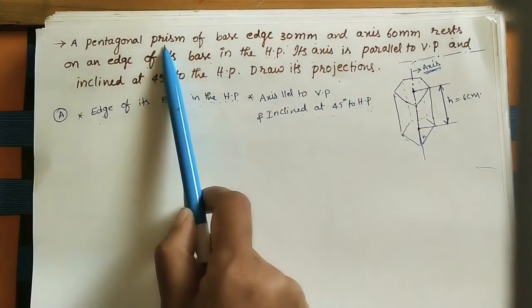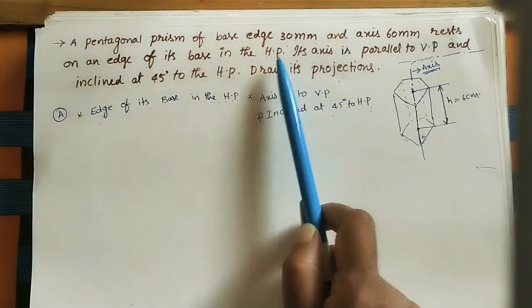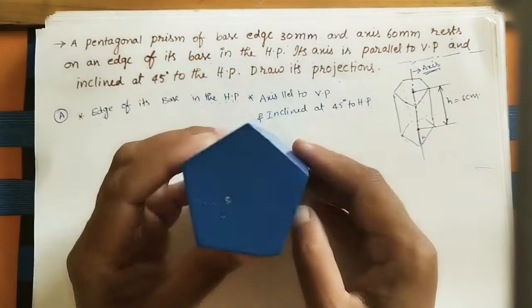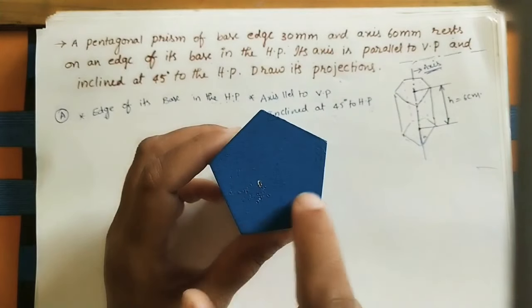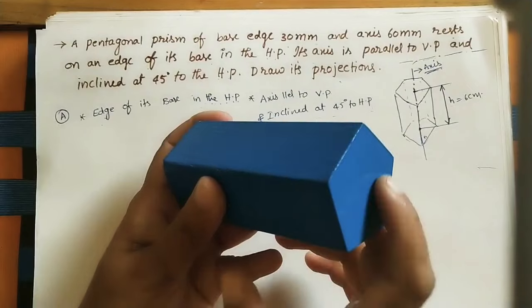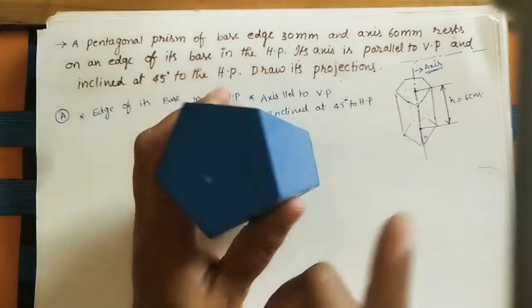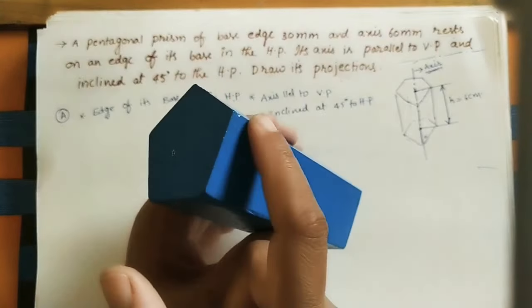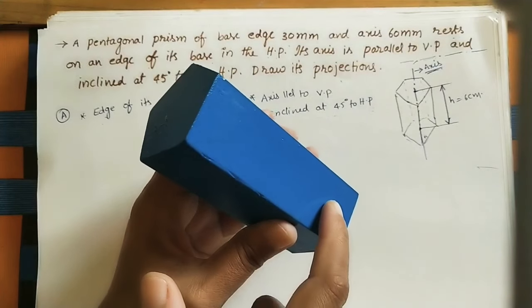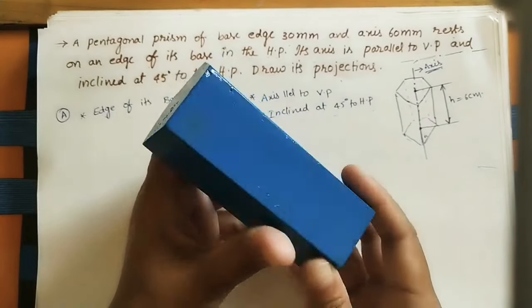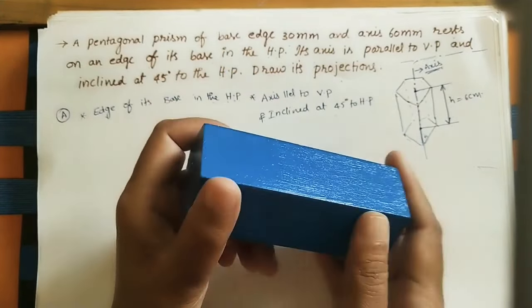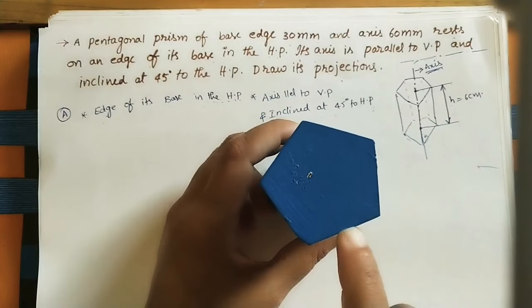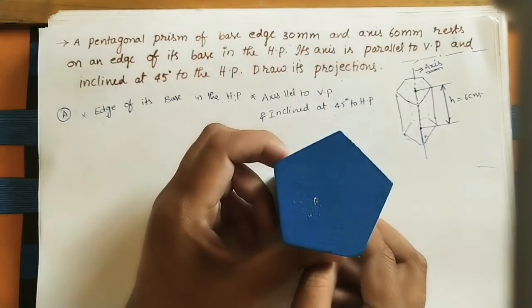HP means horizontal plane, VP means vertical plane. This is the model of the pentagonal prism — it has five sides, we call it a pentagon. Both the bottom and top surfaces are pentagonal. The two pentagons are connected with rectangular faces. Each side of the pentagon has one rectangular face, so there are five rectangular faces in total.